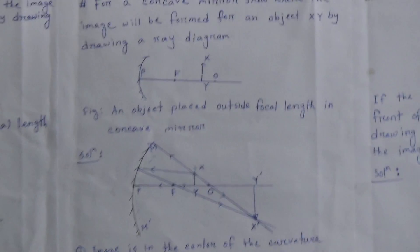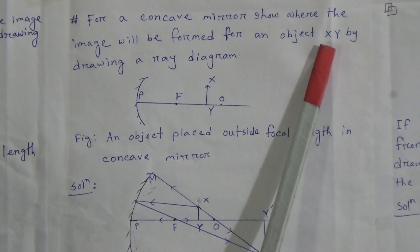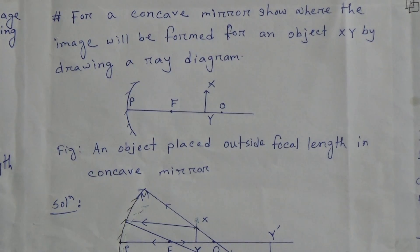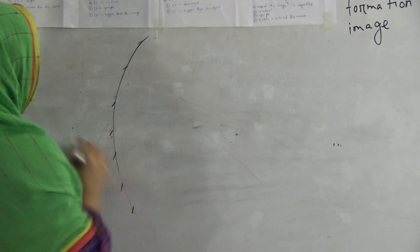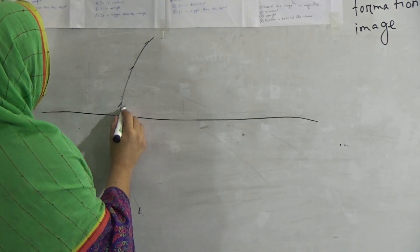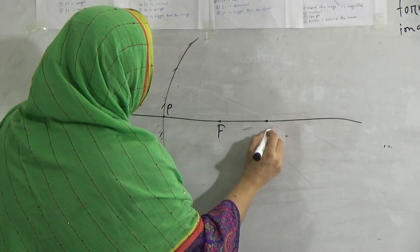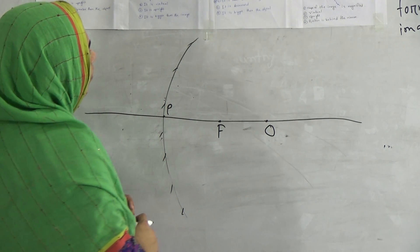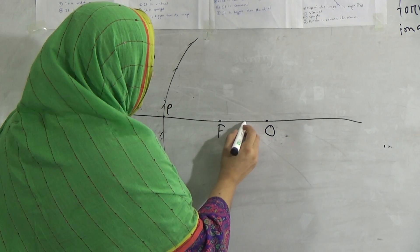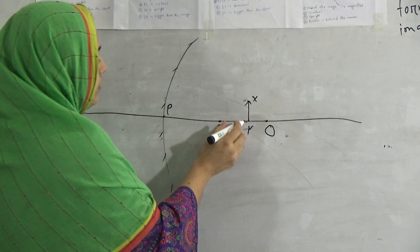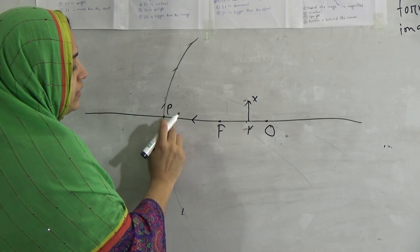Now the next question: for a concave mirror, show where the image will be formed for an object XY by drawing a ray diagram. Given: an object placed outside the focal length of a concave mirror. Draw a concave mirror, then the principal axis. Mark pole P, focal point F, and center of sphere O. The object XY is placed outside the focal length.